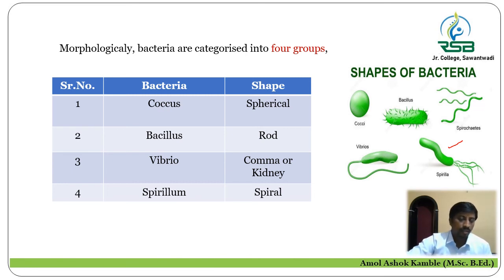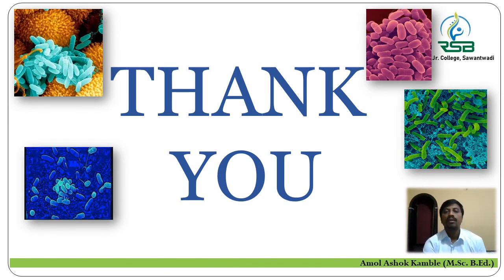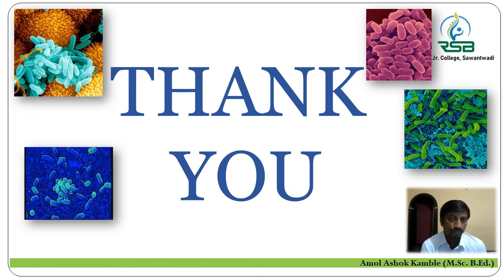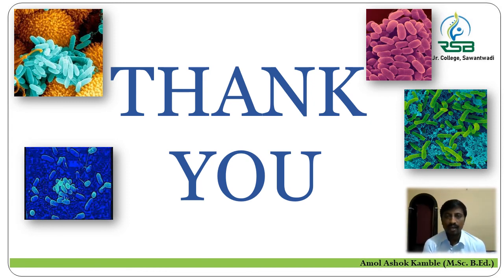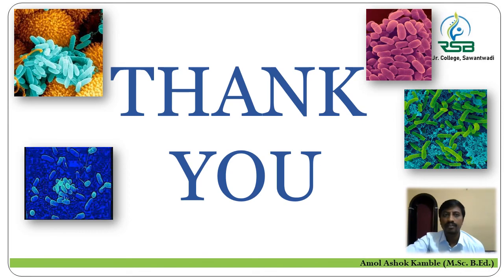It is all about the characteristics of the first kingdom in the five kingdom system of classification — Kingdom Monera — including their characteristics and the types of bacteria based on their shapes. In our next lecture, we are going to continue with the further classification of Kingdom Monera into Archaebacteria and Eubacteria, their characteristics and their significance. Thank you.